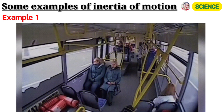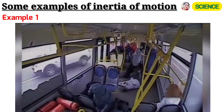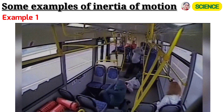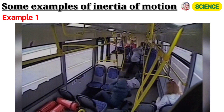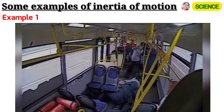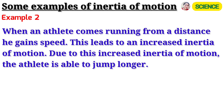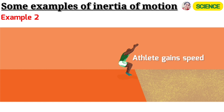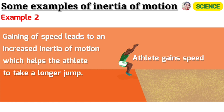Example 2: When the running bus stops suddenly, the lower part of the passenger's body comes to rest, while the upper body portion continues to remain in motion. As a result, the passengers are thrown in the forward direction when a running bus stops suddenly. Example 2: When an athlete comes running from a distance, he gains speed. This leads to an increased inertia of motion, due to which the athlete is able to jump longer.